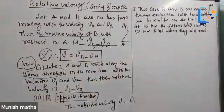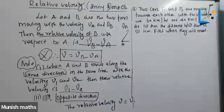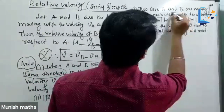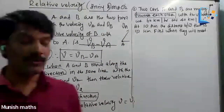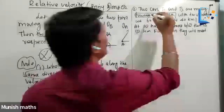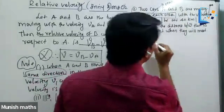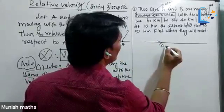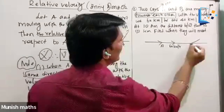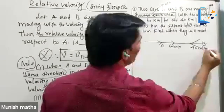Two cars A and B are moving towards each other — that is, in opposite directions. So, technical term: opposite direction. V1 is 60 km per hour and V2 is 40 km per hour. So you get the input.